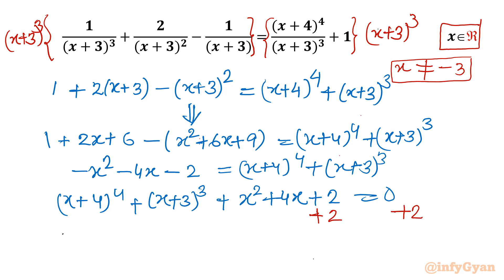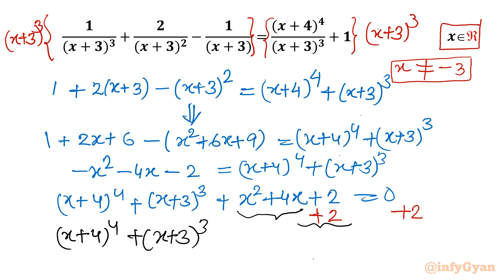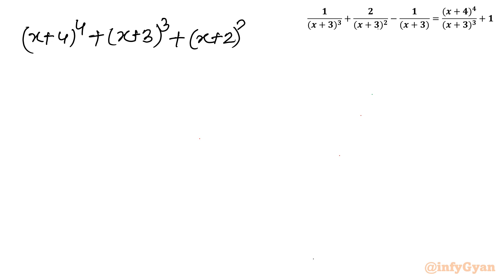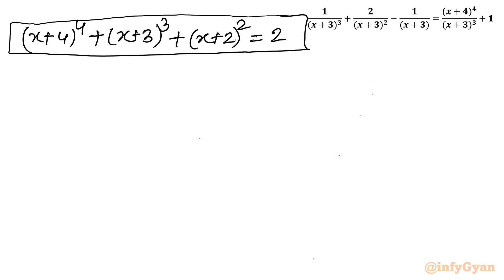So after simplification, the equation is (x+4)⁴ plus (x+3)³ plus (x+2)² equal to 2. This is a quartic equation, so we expect up to four solutions.